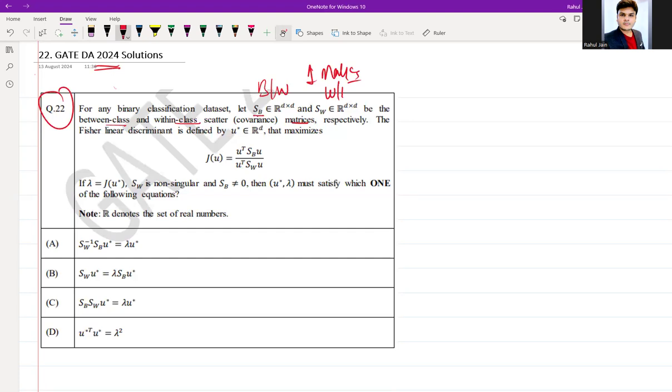The Fisher linear discriminant is defined as j(u) equal to u^T Sb u divided by u^T Sw u. If lambda equal to j(u*), Sw is non-singular and Sb does not equal zero, then u* lambda must satisfy which one of the following equations? R denotes the set of real numbers.